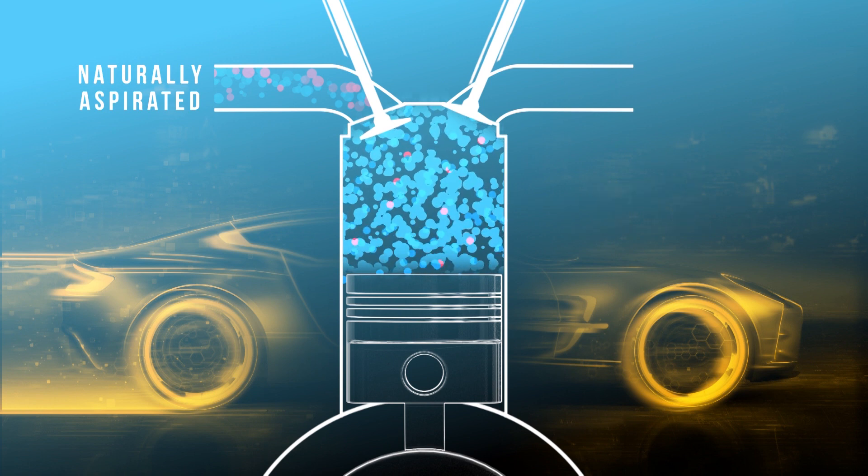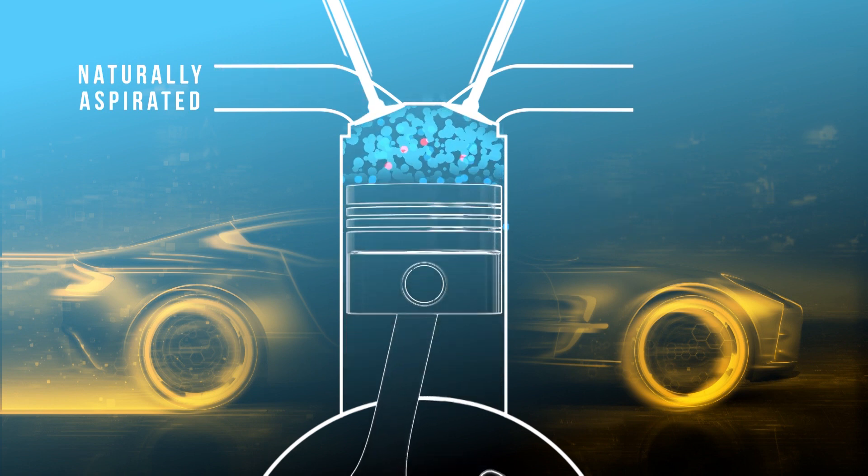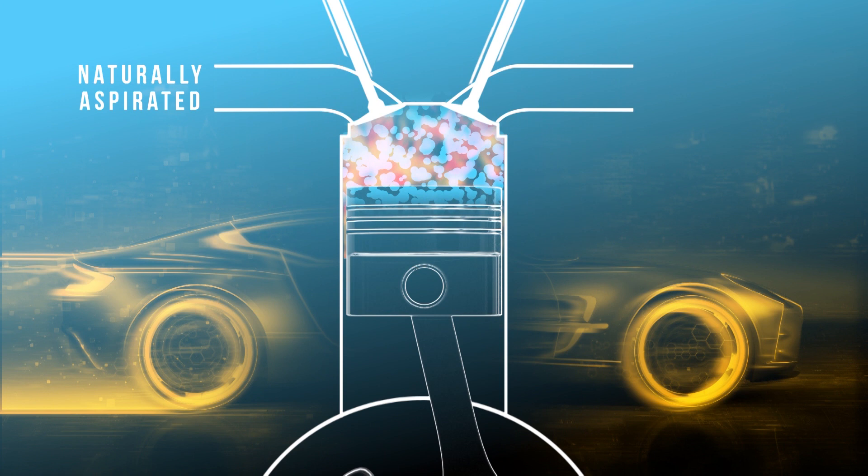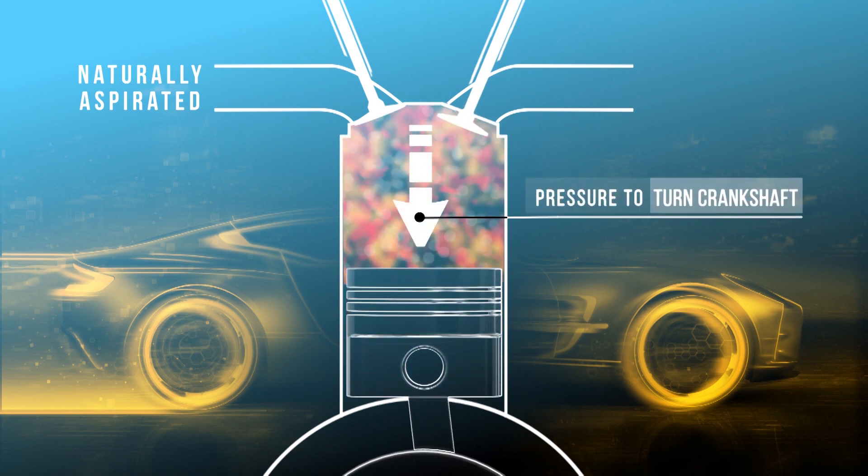A naturally aspirated internal combustion four-stroke engine burns oxygen drawn from the atmospheric air, which it uses to create the pressure needed to drive the crankshaft.